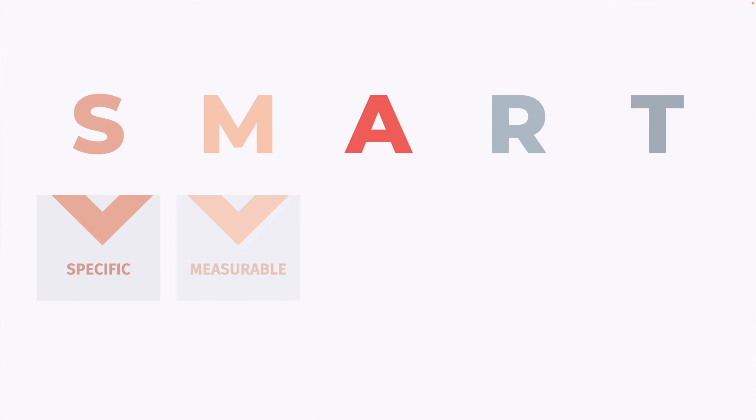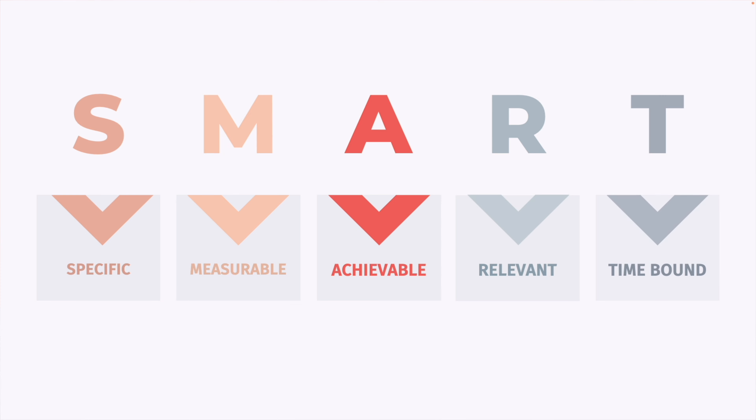But how do you write a training objective? One approach is by setting SMART goals. SMART is an acronym that tells us goals have to be specific, measurable, achievable, relevant, and time-bound.